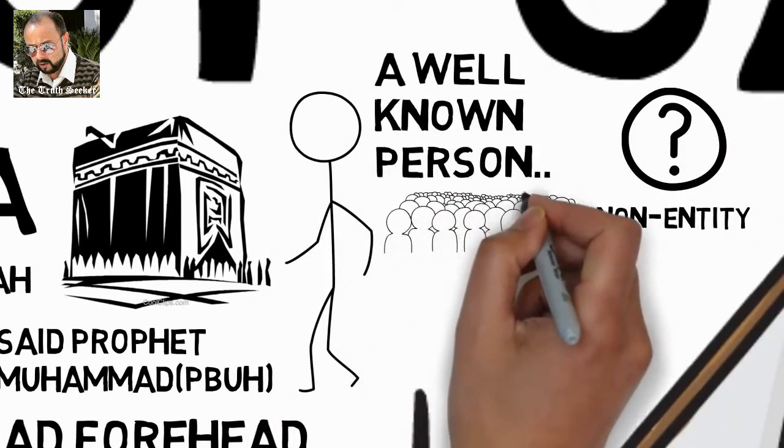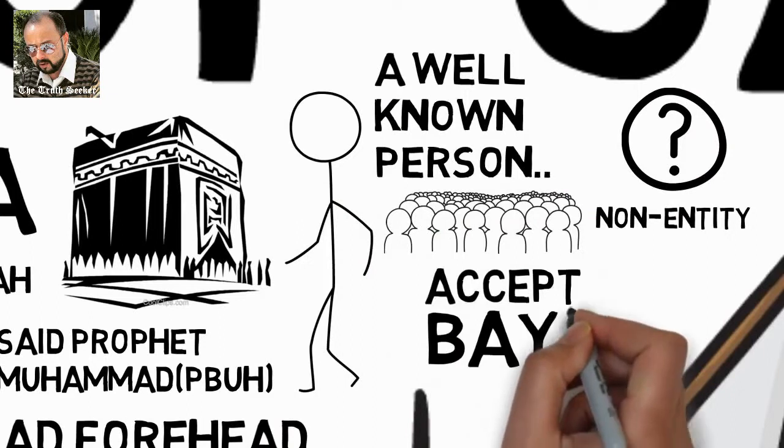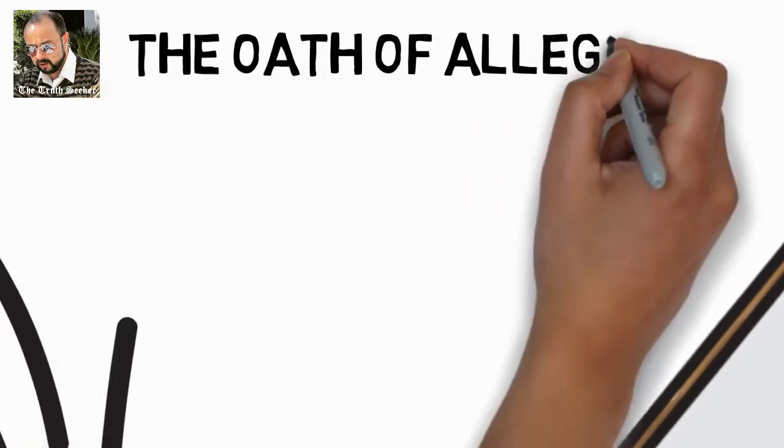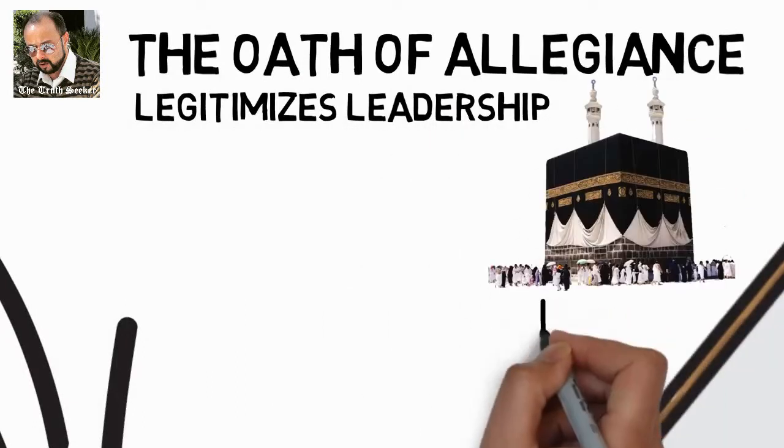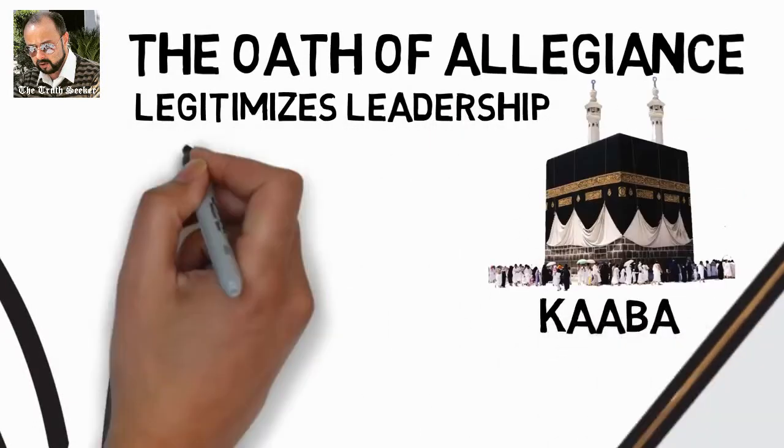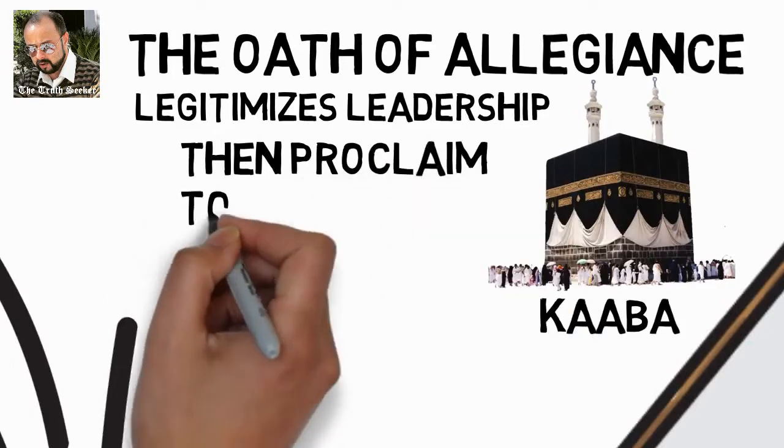When the people of Mecca come out to him, they'll force him to accept the Bay'ah, the oath of allegiance which legitimizes the leadership of the Amir al-Mu'mineen. He will accept the Bay'ah at the Ka'bah, and then proclaim himself to be Al-Mahdi.